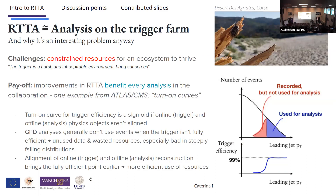Just one slide about analysis in the trigger farm and why it's an interesting problem: the challenge is that resources are very constrained — constrained resources with an ecosystem to thrive. As a workshop participant said, the trigger is a harsh and hostile environment, so bring sunscreen. However, the payoff is that if you improve real-time analysis in the trigger, you benefit the entire collaboration. An example from Atlas and CMS: the turn-on curves from the trigger, especially for objects without perfect matching between trigger and analysis level, mean you end up wasting a lot of recorded data.